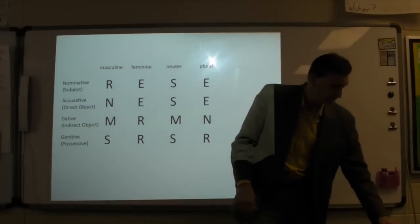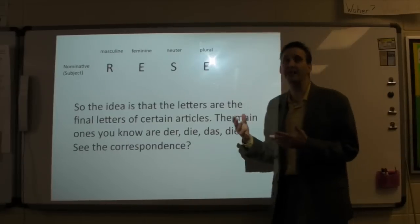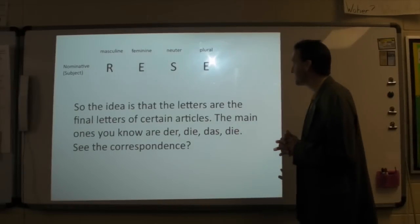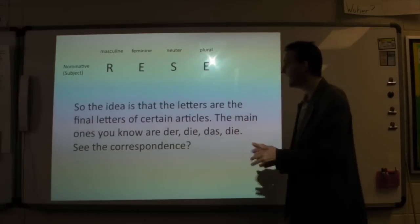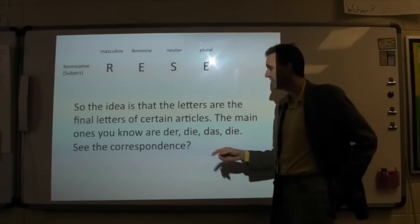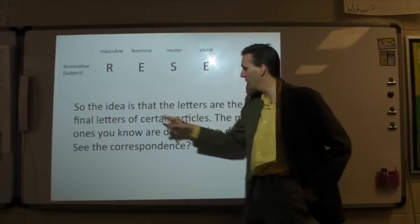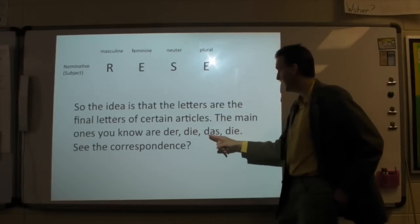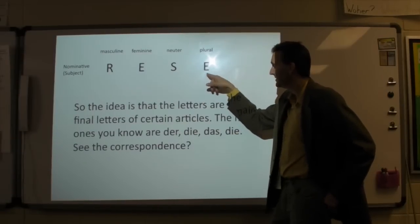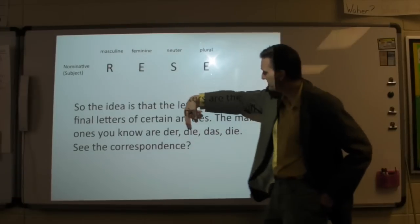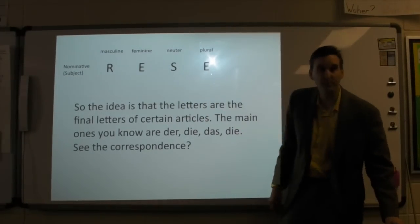The idea is that these letters are the final letters of certain articles. The main ones you already know, or should know, are der, die, das, and die for the plural. Do you notice that der ends with R? Die ends with E? Das ends with S — and there it is. And the plural E is over there. So der is for masculine words, E is for feminine words that are subject, das is for neuter words that are the subject.